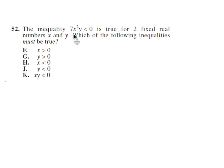Number 52. 7x squared y is less than 0 is the same as saying 7x squared y is negative. So we have a positive number times, let's see, whenever you square a number, whether it's positive or negative, you're going to get positive. So you're going to have a positive times a positive. So this has to be a negative to get a value that's negative. So the y has to be negative. The answer is J.